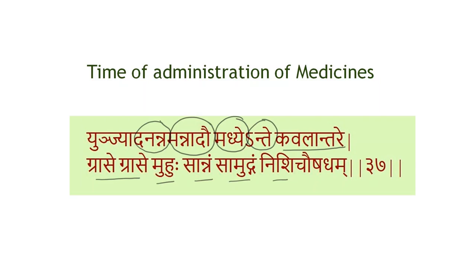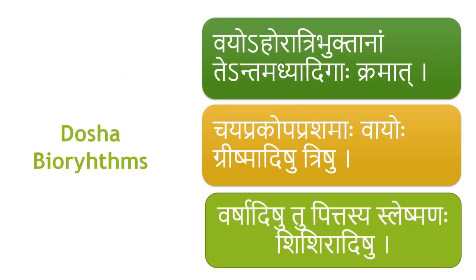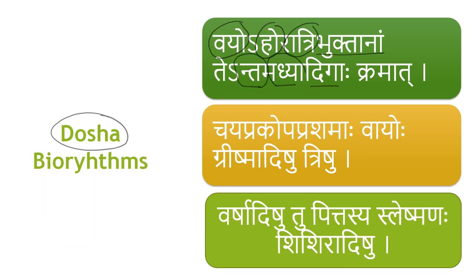This assumes importance in the context of recent understandings related to chronobiology. In Ayurveda, it is documented that the three doshas also show biological variations. As per Vayao — age — Aho — day — Ratri — night — and Bhuktanam — in relation to food intake — they vary as per Anta, Madhya, and Adi. That is, at the end Vata is dominant, in the middle Pitta is dominant, and at the beginning Kapha is dominant.